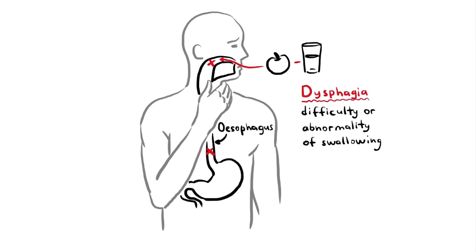In contrast, odynophagia is pain with swallowing. The swallowing reflex is the process by which food is transported from the mouth to the stomach. Anatomically, swallowing has been divided into three phases: oral, pharyngeal, and esophageal phases.